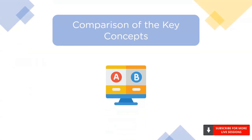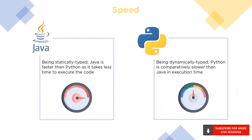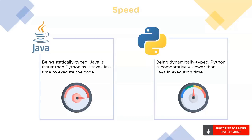Now that you've been introduced to both Java and Python, let's compare the fundamental concepts. First up is speed. Java is a statically typed language, which means the syntax is checked at compile time, so the execution speed is faster. Python, on the other hand, is a dynamically typed language, so the syntax is checked at the time of execution, which makes the execution speed slower when compared to Java.